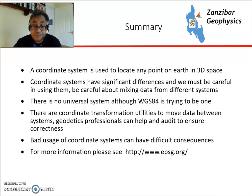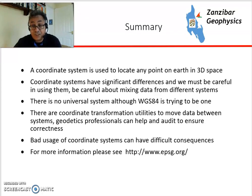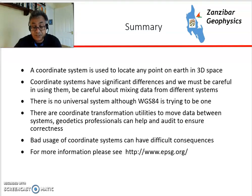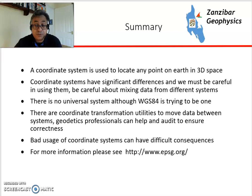In summary: a coordinate system is used to locate any point on the Earth in 3D space, and different coordinate systems have significant differences. There is no universal standard — WGS84 is trying to be one — so you need to know what coordinate system you're using. There are coordinate transformation utilities to move data between systems; some are built into ArcGIS, which is helpful. But if it's really critical — locating a well, a pipeline, or anything involving safety — get a geodetics professional to audit things and make sure everything is correct. Bad use of coordinate systems can have very serious consequences. For more information, visit EPSG.org.